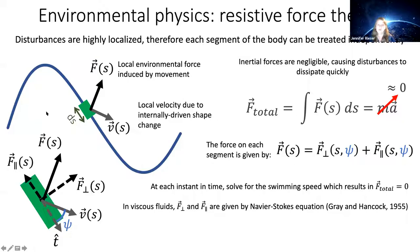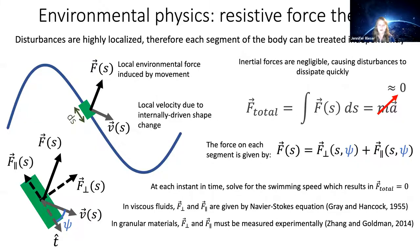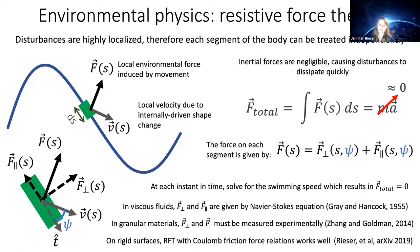In viscous fluids this was solved by Gray and Hancock in 1955. In granular materials, it works actually better than in viscous fluids — realized in the late 2000s and early 2010s. More recently, we found it also works well for modeling Coulomb friction interactions.